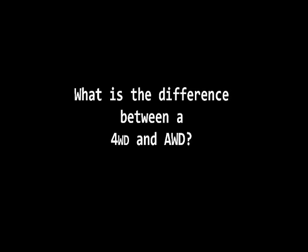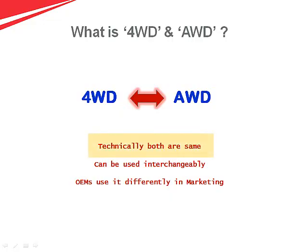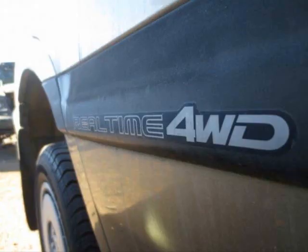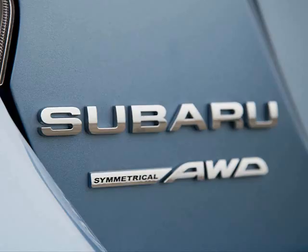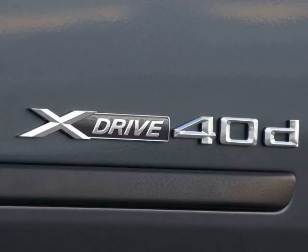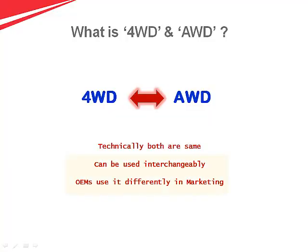Well, technically both are the same. It's just that the OEMs use the four wheel drive and all wheel drive terms interchangeably while marketing their SUVs. Now let's check out the types of four wheel drive and all wheel drive systems.